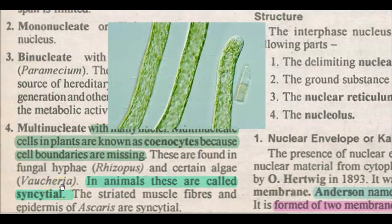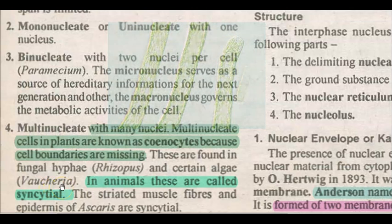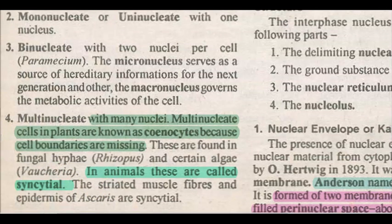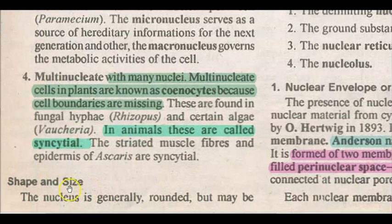Vaucheria is a kind of algae in which a coenocytic condition can be seen. Apart from fungi and plants, this coenocytic condition can also occur in animal tissues or animal cells, where it is referred to by the analogous term syncytial condition. Striated muscle fibers and the epidermis of Ascaris are commonly found to have a syncytial — that is, multinucleate — condition.